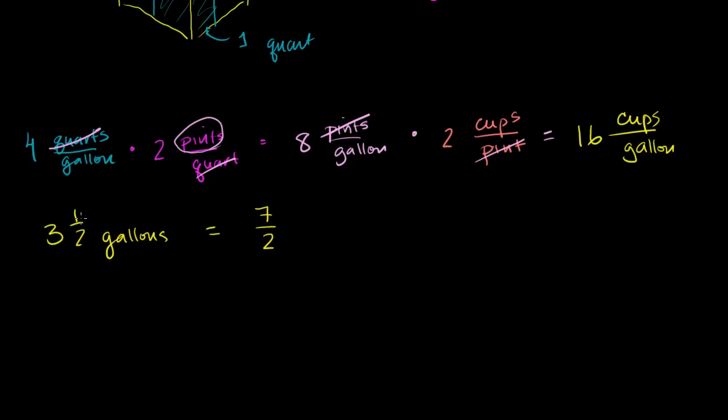If you divided 7 by 2, you would get 3 with a remainder of 1, or this would be 3 and a half. So this is the exact same thing. So we want to know how many cups are in 7 halves gallons. So what we want to do is end up with cups, and we want the gallons to cancel out.